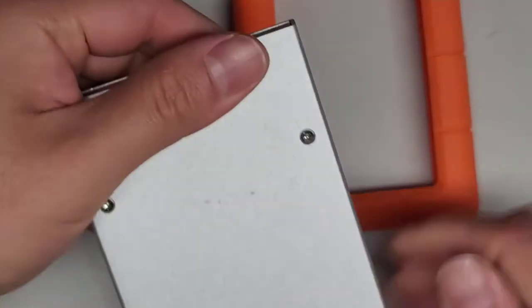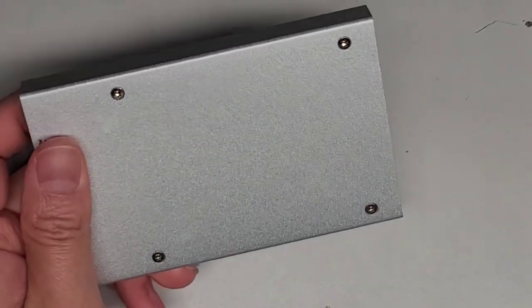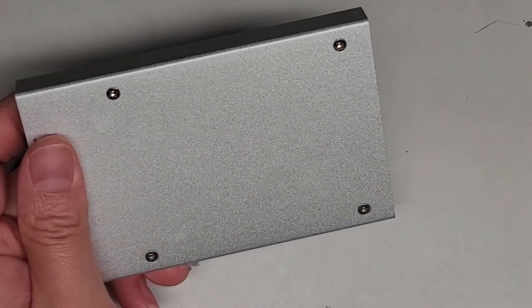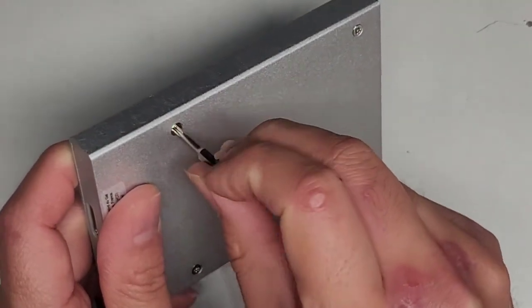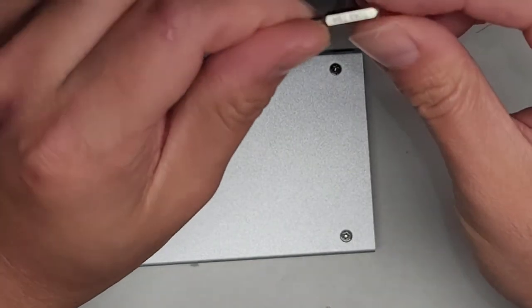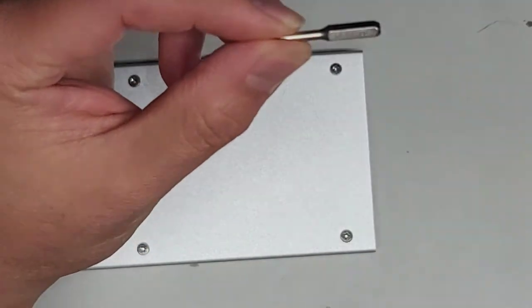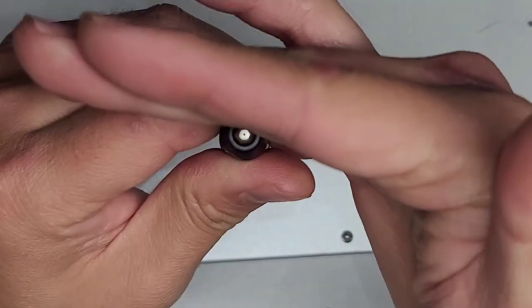We're gonna need a special screwdriver to open this. You need a security torx bit. Let me see if I can get which size it is. This is a 9. They label it 9H. It's a Torx T9 with a security hole at the end. So you can see there's a hole in it.